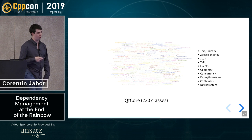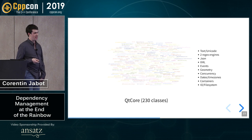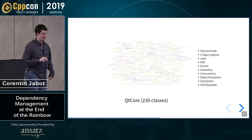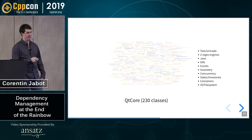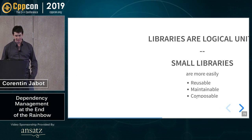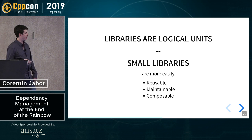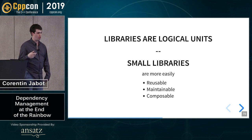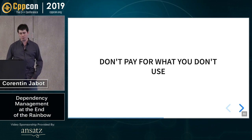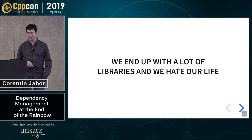This is the Qt core library. I love Qt and I don't want to pick on them, but they have this library called Qt core. When something is called 'core', you should be very cautious, because probably nobody knows what it is. Qt core does Unicode, XML, everything — and it's one library. That means if you want to use it, you have to compile it first, and that takes forever. Maybe you just wanted a single thing from that library. So to make C++ compile faster, write small libraries, write small modules that do only one thing. Small libraries are more easily reusable, maintainable, and composable. Libraries should be logical units rather than organizational units. Don't pay for what you don't use — don't compile what you don't need.